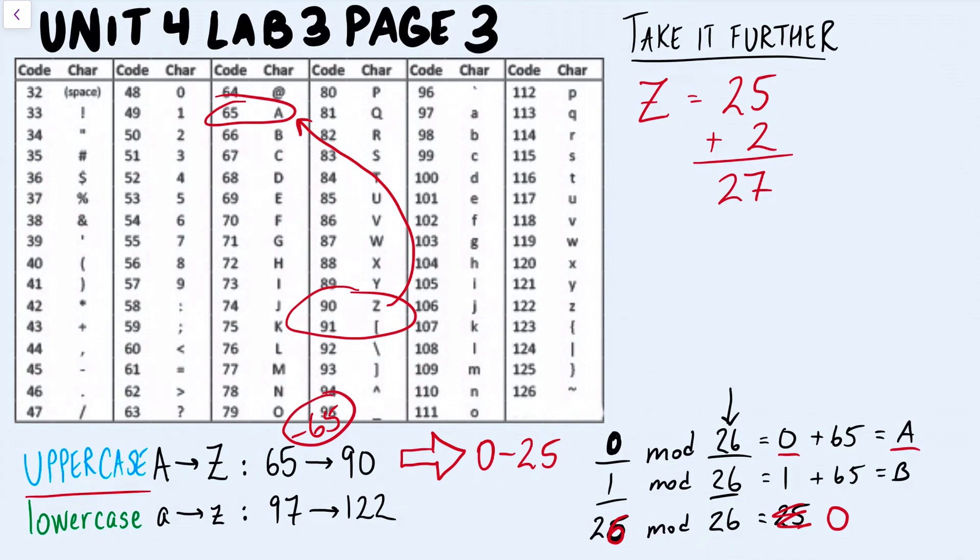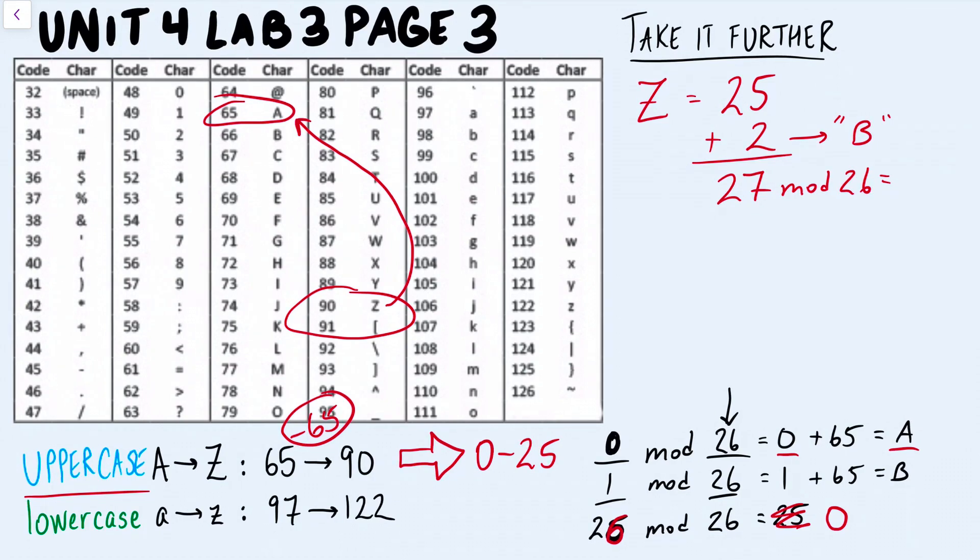So if you remember this, if we're going to add 2, it should end up equaling B, capital B, after we add 65 back to it. But what happens is if you do 27 mod 26, you end up with the value, the remainder, the way mod works, is you end up with the remainder of 1. And then when you take that 1 and you add 65, you get 66, so Unicode 66, which is going to equal uppercase B.